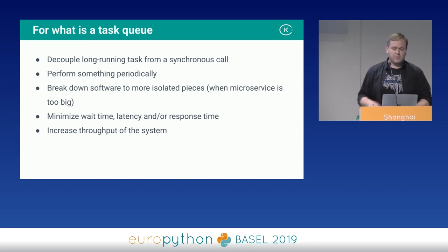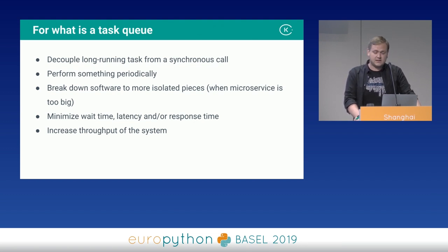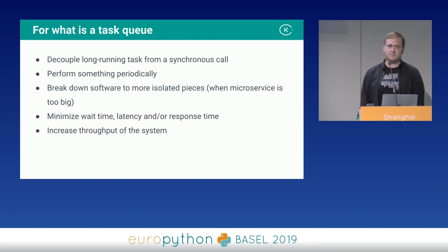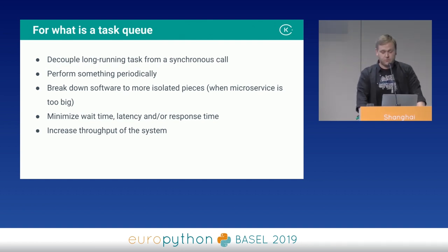With decoupling, we can minimize wait time, latency, and response time altogether. When you combine everything, it will increase the throughput of your system. That's what a task queue is good for.